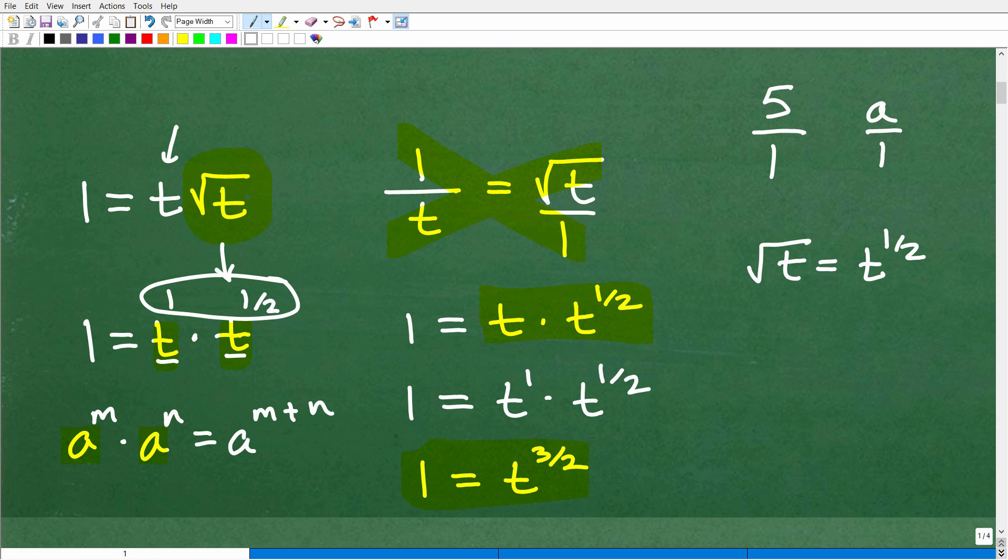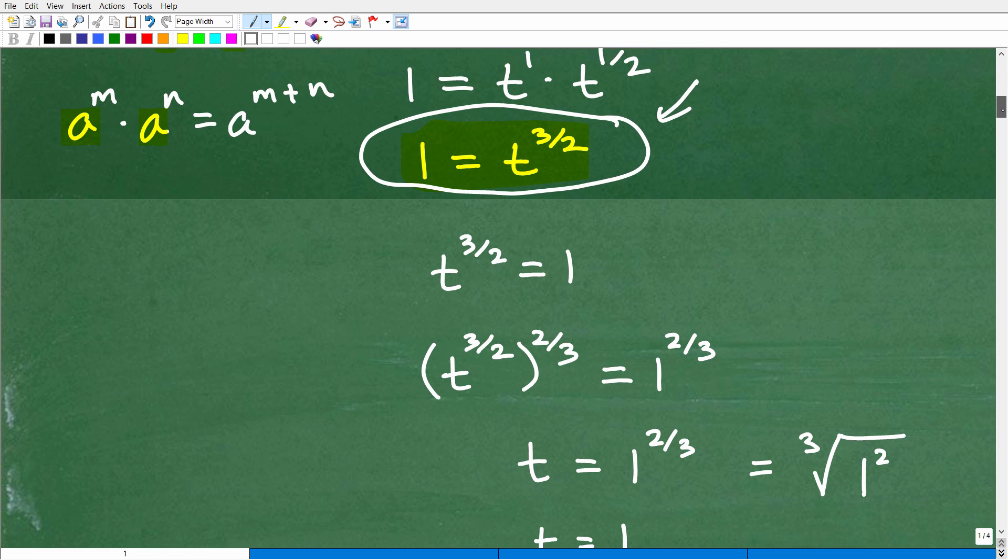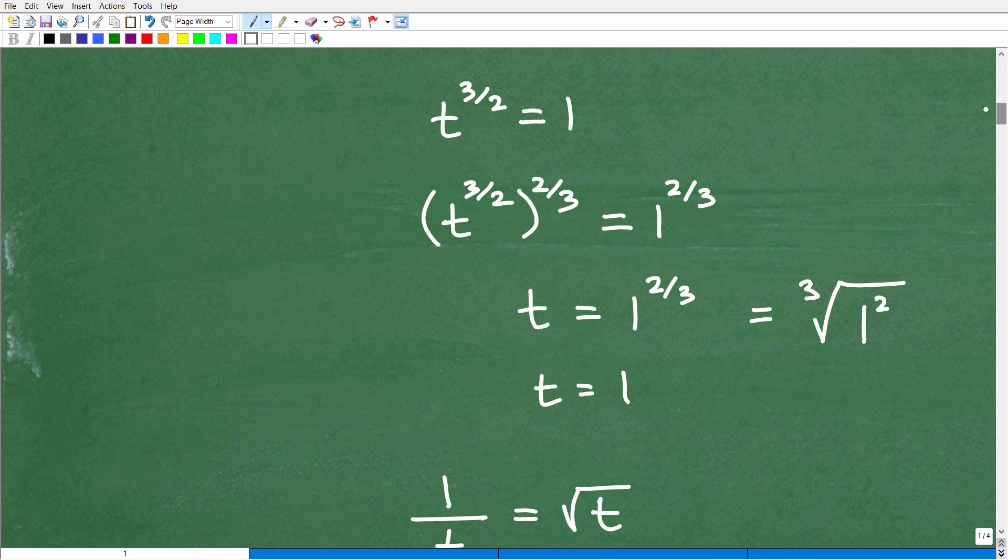Pretty interesting problem. Right off the bat we're changing our square root to a rational exponent - that's the only way to really handle this particular problem. So now we have to figure out what we're going to do here. We have 1 is equal to t to the 3 halves power. So how do we solve this equation? This is part 2 of this exercise.